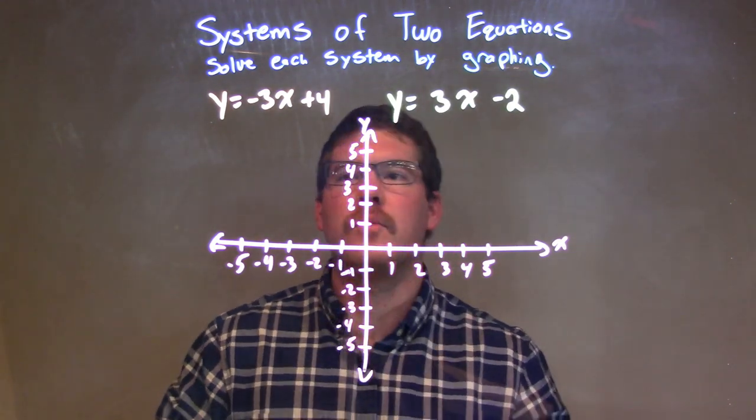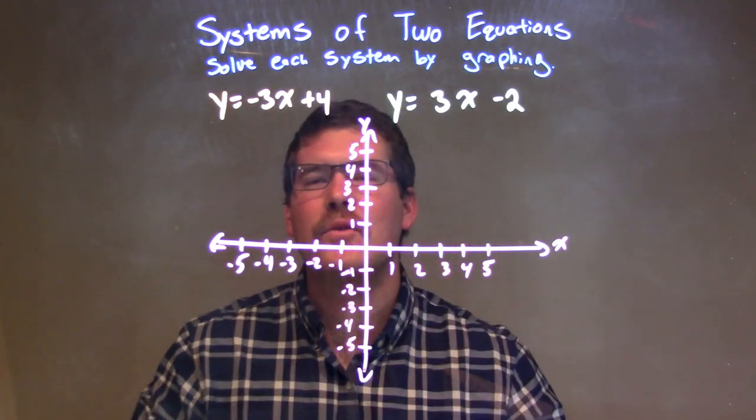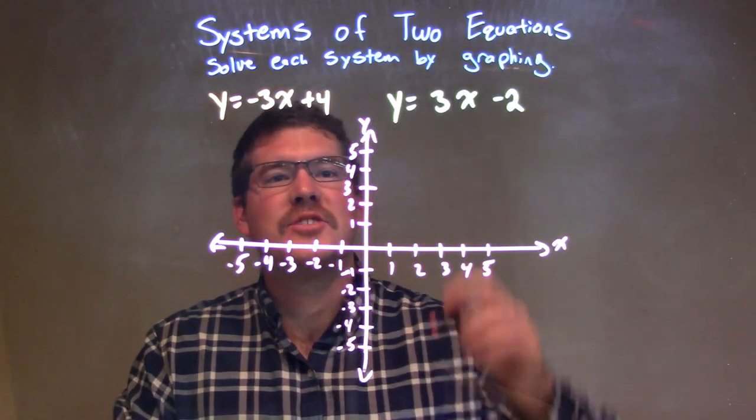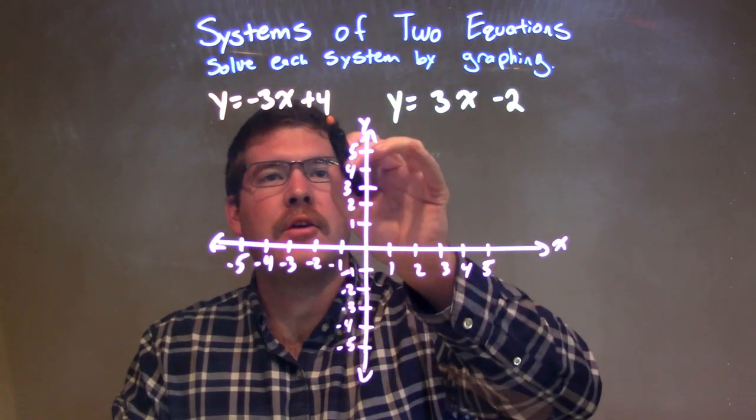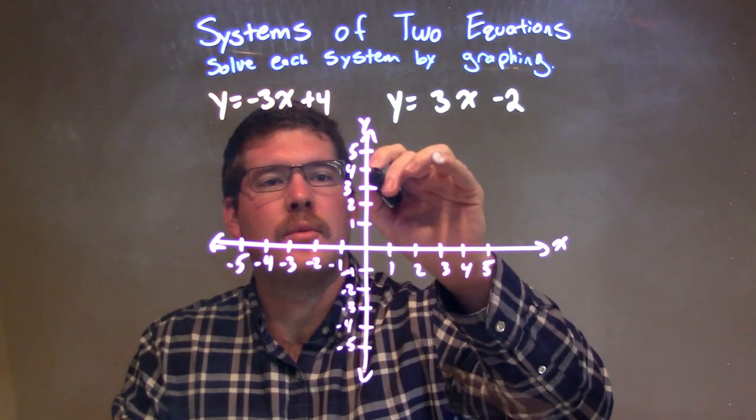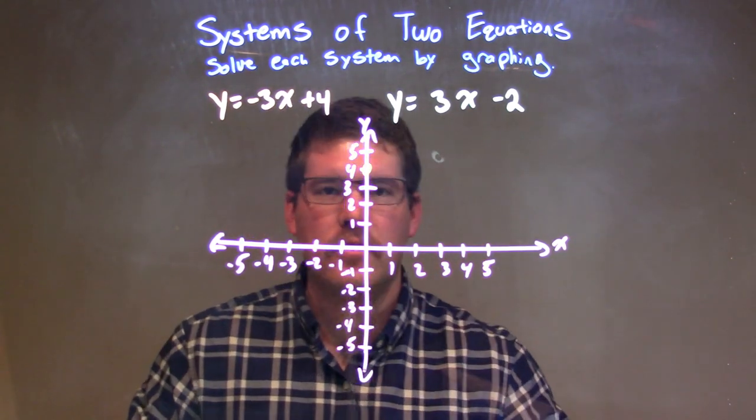Well, let's graph the first one, our yellow equation. y equals negative 3x plus 4. So, we're going to start at 4, right? Our y-intercept is that 4 value. So, we start at 4 at the point right there. Okay. We start at 4.